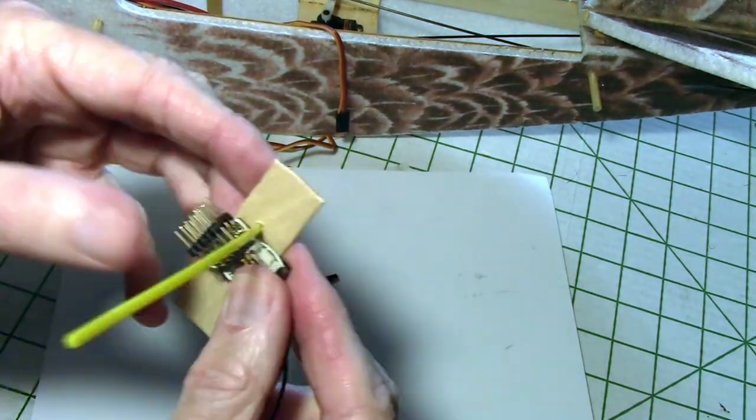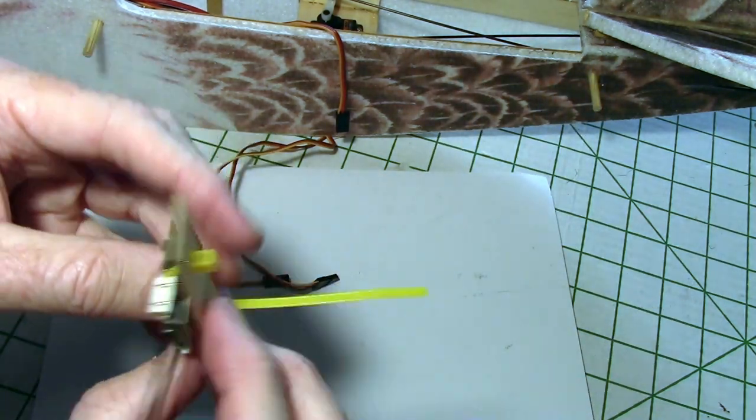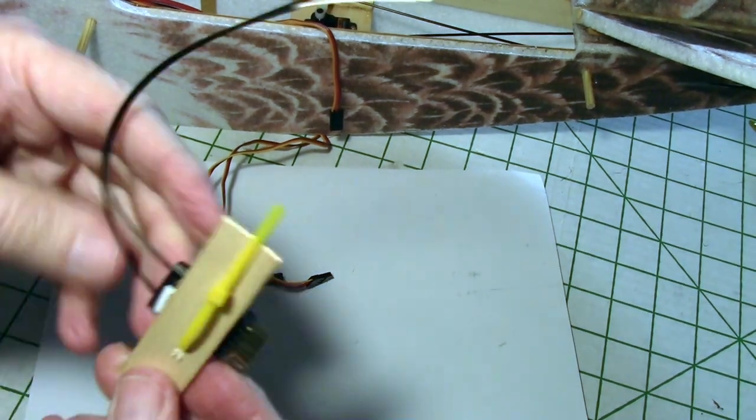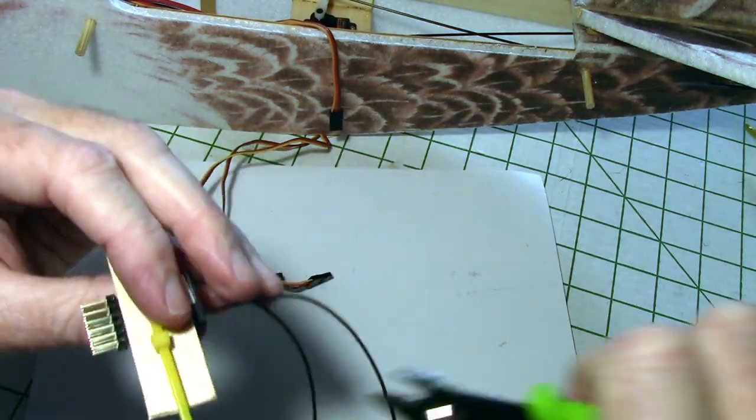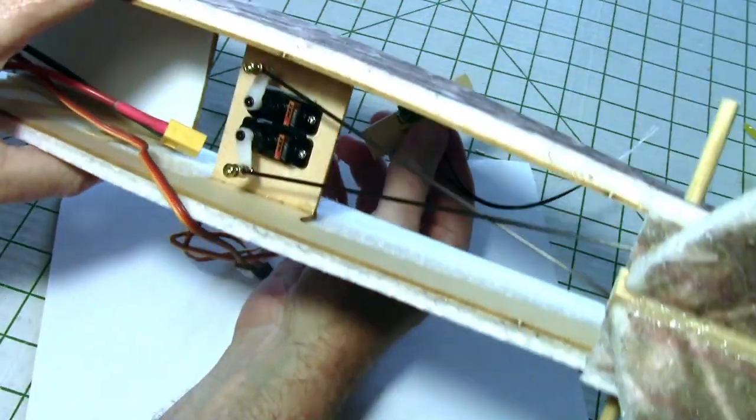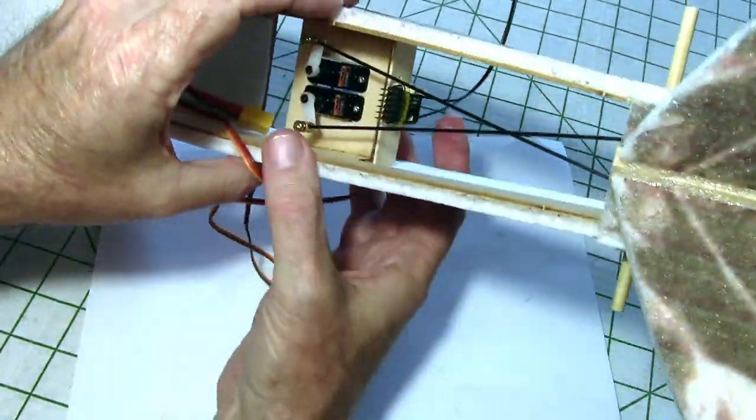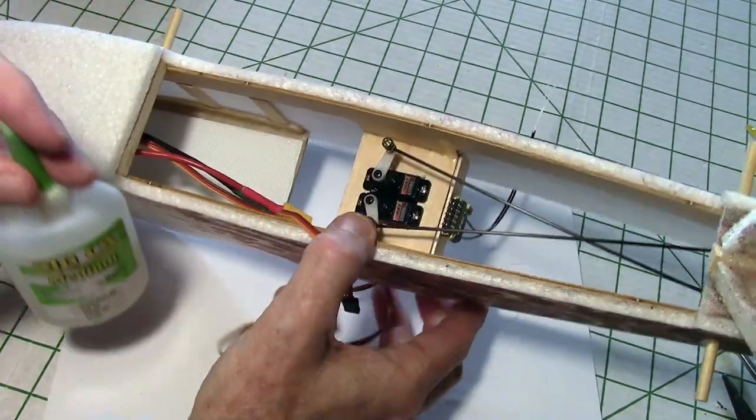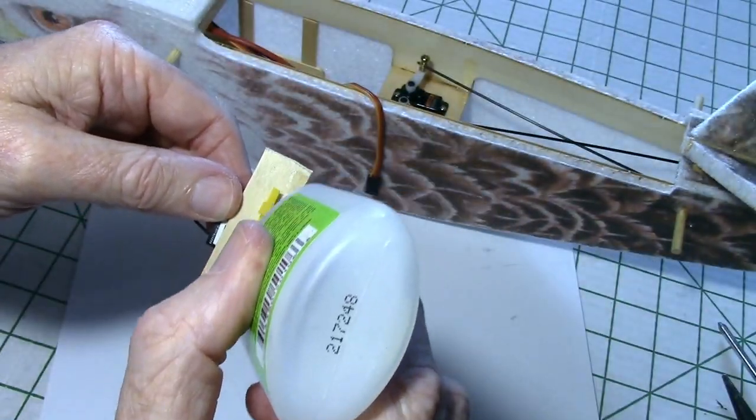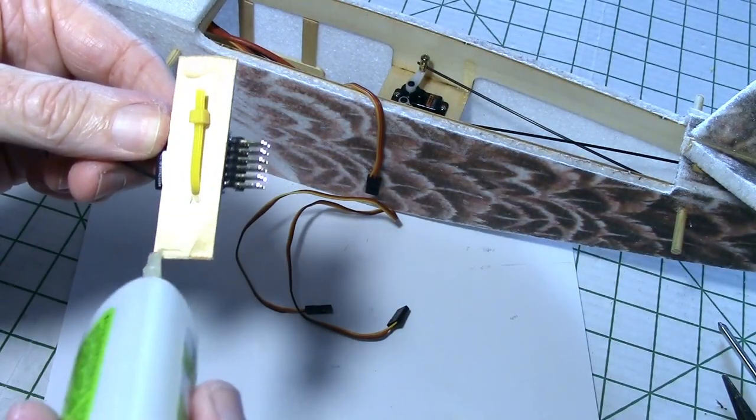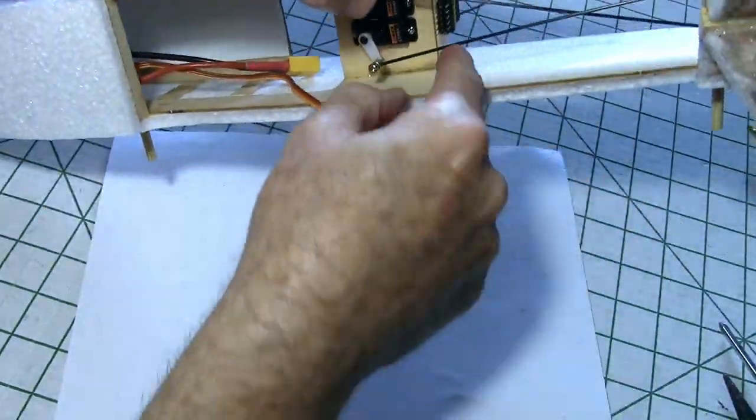Now I've cut a small piece of tongue depressor to mount the receiver on. I'm holding it down with a tie wrap that's gone through some holes I've drilled out. I'll then mount this right behind the servo tray so I have access to the pins. Next I'll glue in the tongue depressor with some medium CA. Just apply that to the tongue depressor along the top edge and the sides. And then insert it back in the fuselage. Press it in and let that dry.